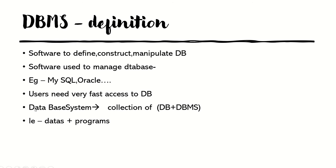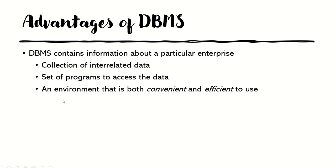There is one more term: a database system. A database system is a collection of database and DBMS. That means it is a collection of data (that is, the database) and a collection of programs (that is, the DBMS). Their combination is called a database system.